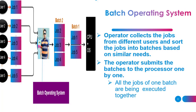The operator collects jobs from different users and then sorts them based on similarities and similar needs. Based on those similarities, the operator prepares the jobs and makes batches — that's why it is called a batch operating system. It is important to note that all the jobs of one batch are executed together.